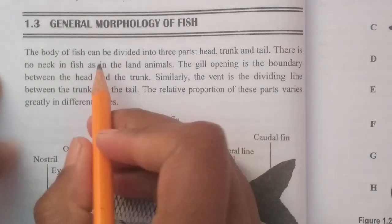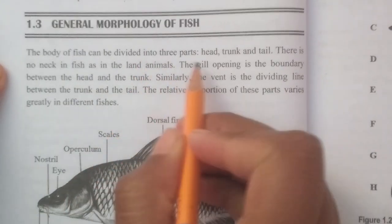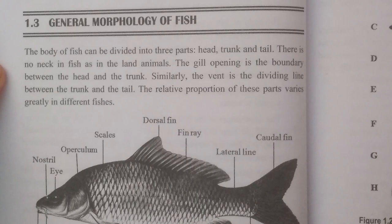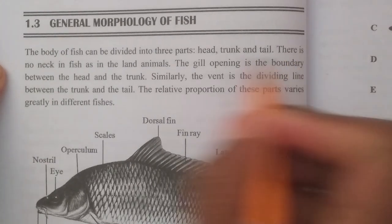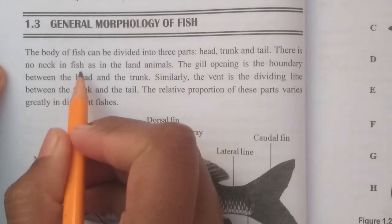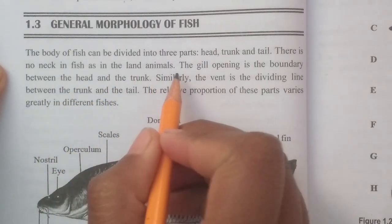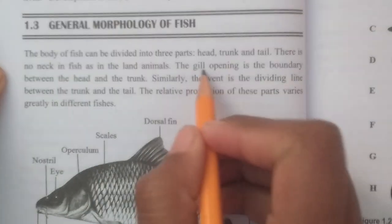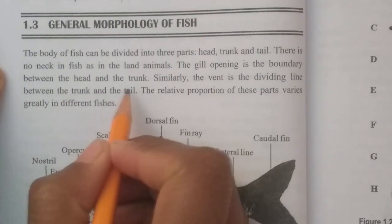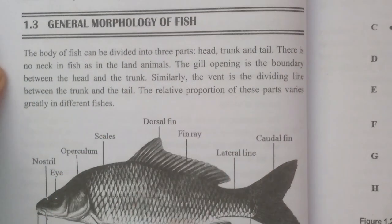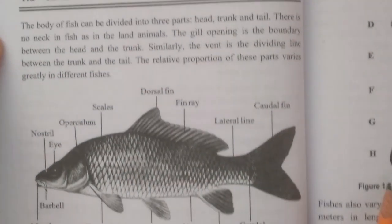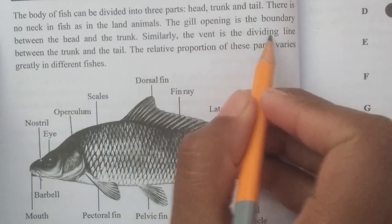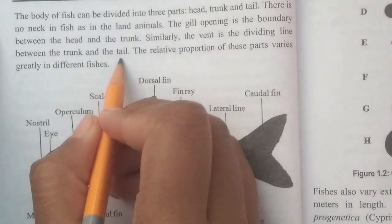The body of fish can be divided into three parts: head, trunk, and tail. There is no neck in the fish as in the land animals. The gill opening is the boundary between the head and the trunk. Similarly, the vent is the dividing line between the trunk and the tail.